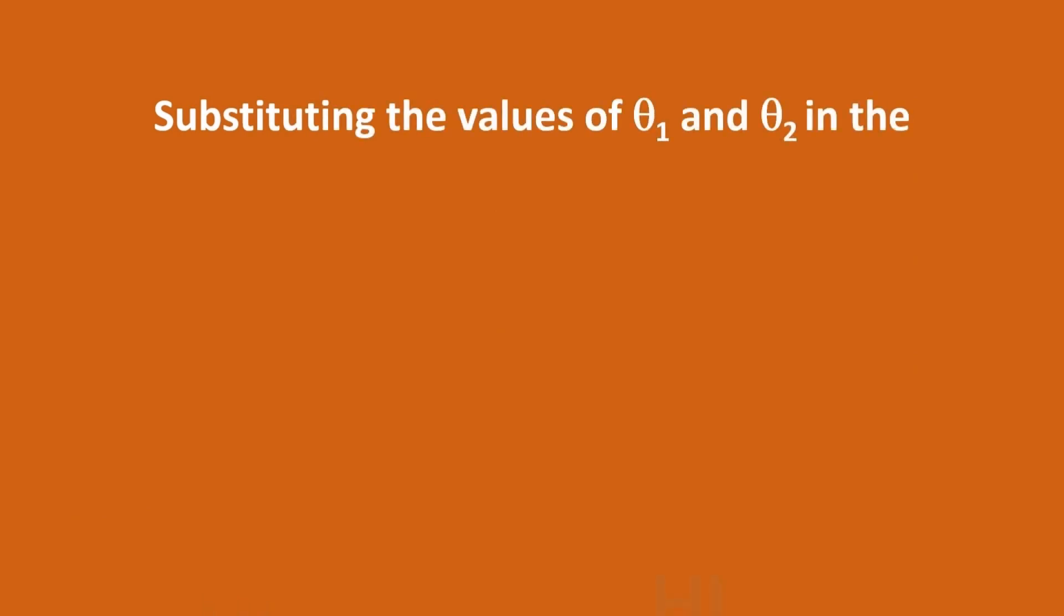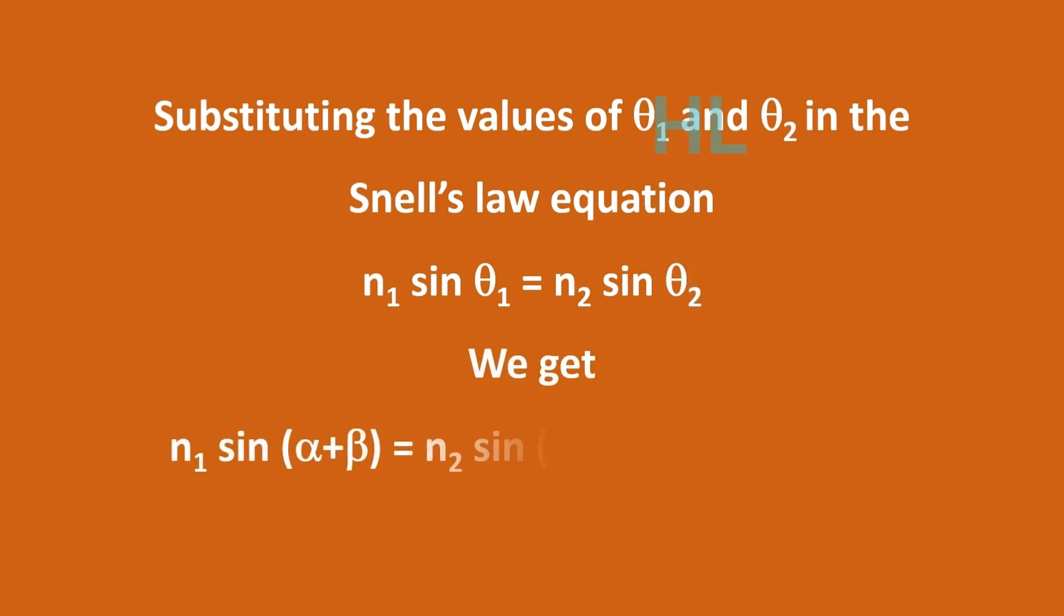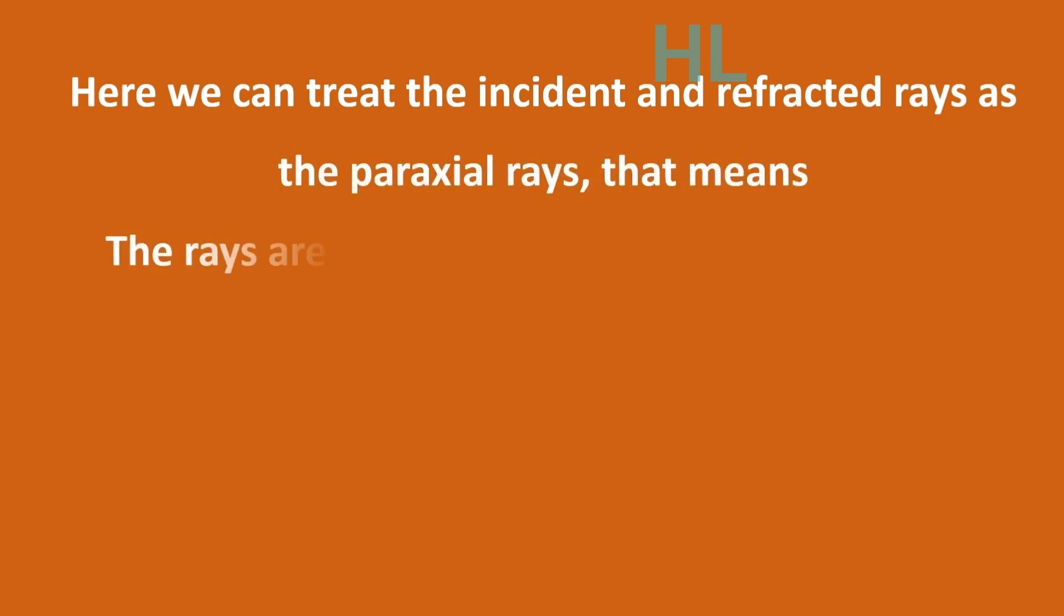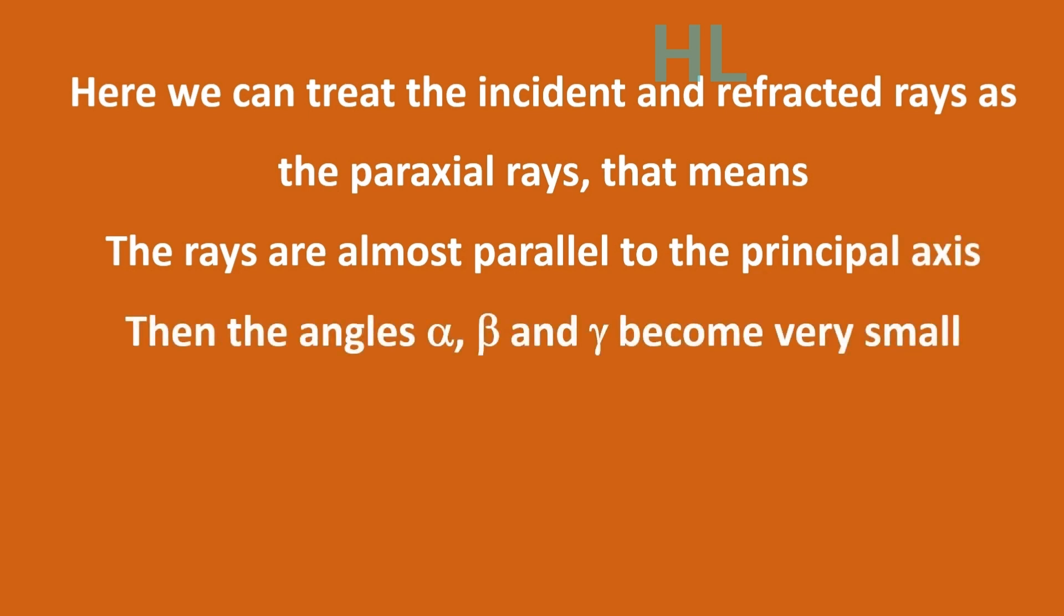Substituting the values of theta1 and theta2 in the Snell's law equation N1 sin theta1 equals N2 sin theta2, we get N1 sin of alpha plus beta equals N2 sin of beta minus gamma. Here we can treat the incident and refracted rays as paraxial rays, that means the rays are almost parallel to the principal axis. Then the angles alpha, beta and gamma become very small. Then sin of alpha plus beta can be written as alpha plus beta, and sin of beta minus gamma can be written as beta minus gamma. Now the equation can be written as N1 times alpha plus beta equals N2 times beta minus gamma.